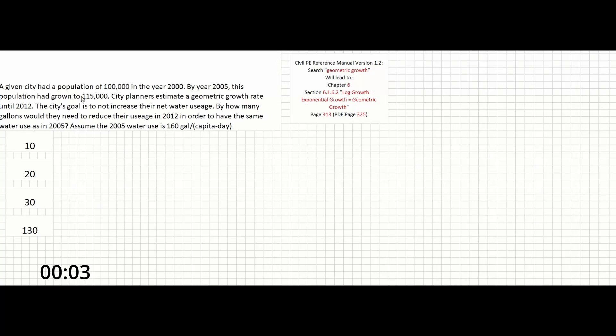A given city had a population of 100,000 in the year 2000. By year 2005, this population had grown to 115,000. City planners estimate a geometric growth rate until 2012. The city's goal is to not increase their net water usage. By how many gallons would they need to reduce their usage in 2012 in order to have the same water use as in 2005? Assume the 2005 water use is 160 gallons per capita day.